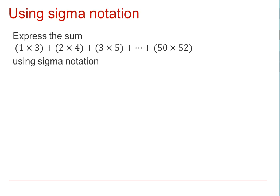In this example here, we need to express the sum of 1 times 3 plus 2 times 4 plus 3 times 5 right up to 50 times 52 using sigma notation. We should be looking for the pattern. We may note that for every one of those first numbers in the bracket, the second number, let's call that first number R, the second number is always 2 more. So let's call that R plus 2.